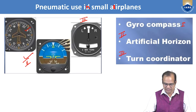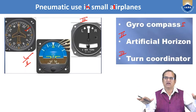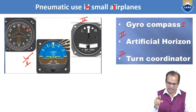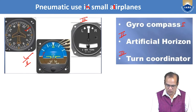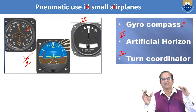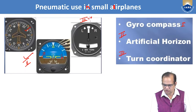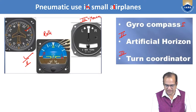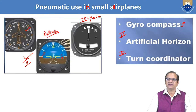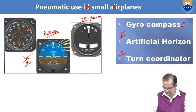The artificial horizon maintains the rolling state of the aircraft. If the aircraft rolls, the artificial horizon also moves, and accordingly the pilot can observe how many degrees the aircraft is rolling. The turn indicator shows yawing and rolling. All these instruments work with the help of the vacuum system of the aircraft.